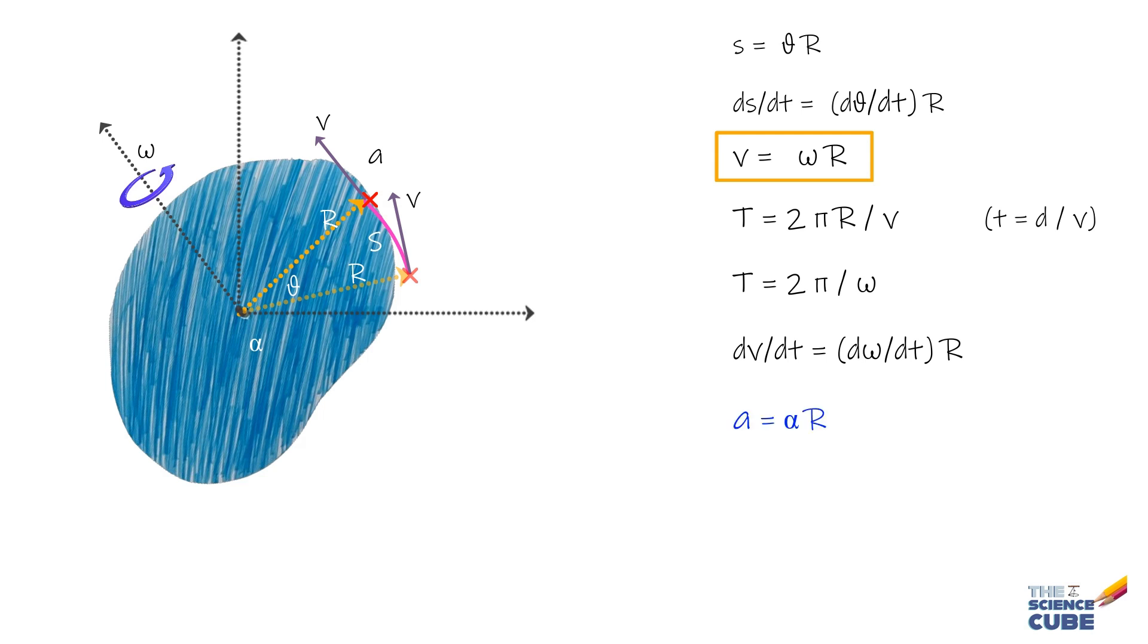In this equation, what you should be cautious about is that since V is a tangential velocity, dV/dt represents linear acceleration tangent to the path of the point. Therefore, we call it tangential component AT of the linear acceleration and write it as AT equals alpha R.